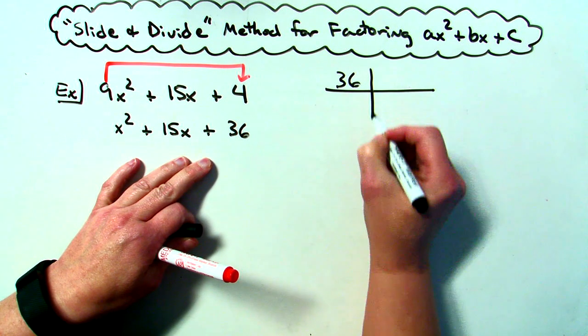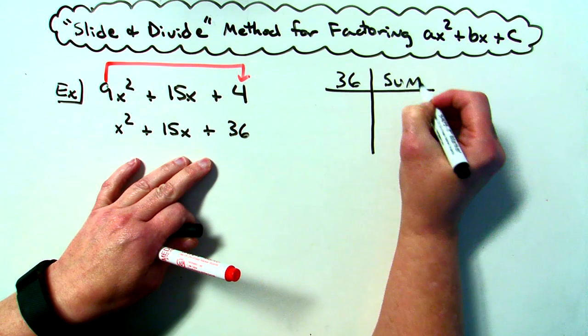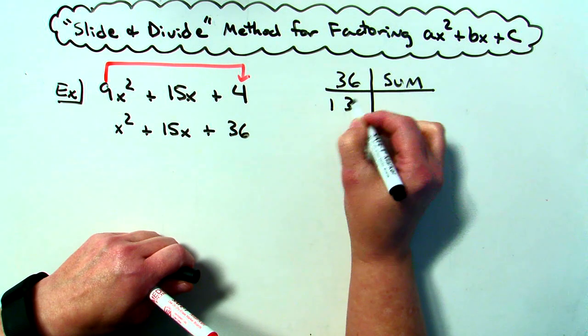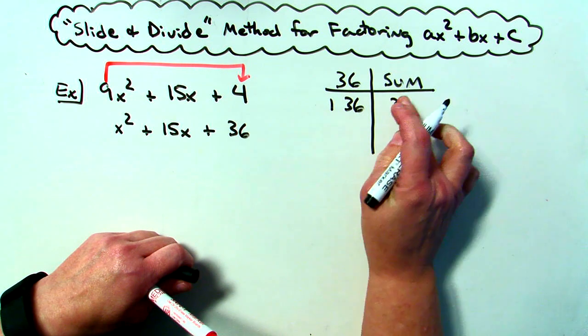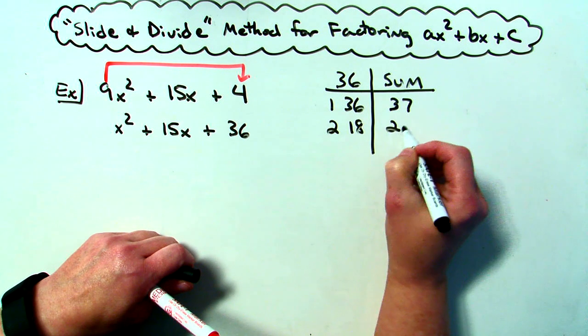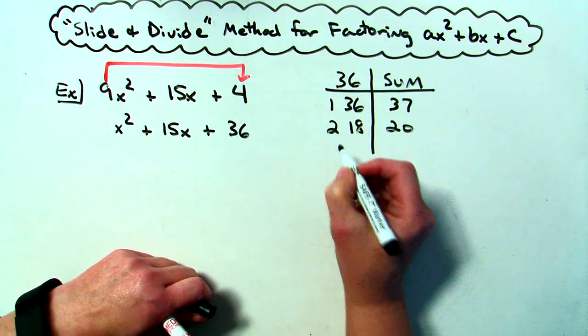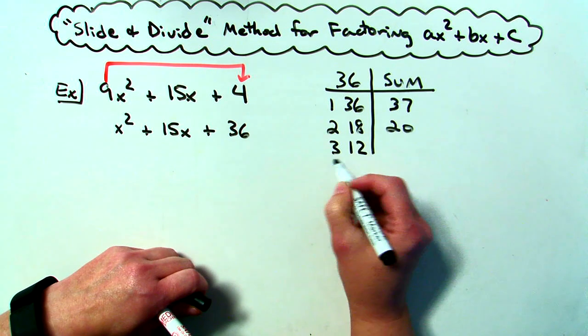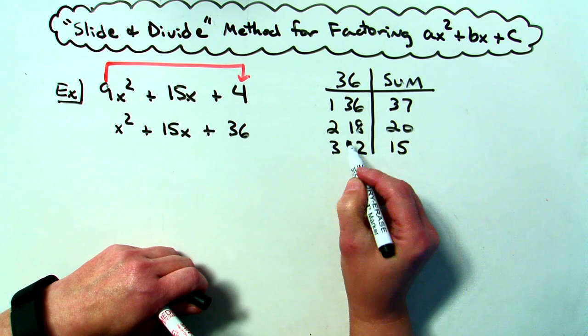I'm looking for numbers that multiply together to be 36 and sum to a positive 15x. So 1 times 36 and then when I add is 37. 2 times 18 when I add I get 20. Still not getting that 15 yet. 3 times 12 is going to be 36. And now when I add I do get 15.